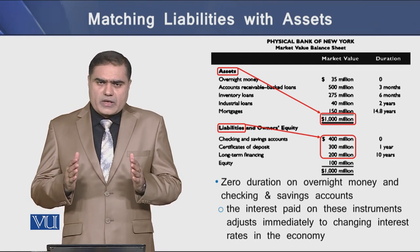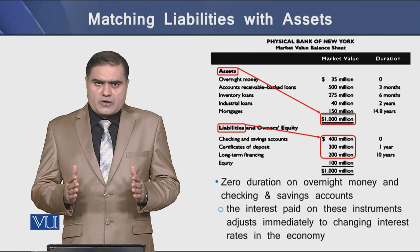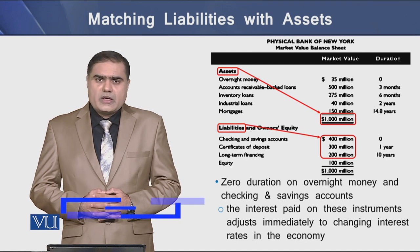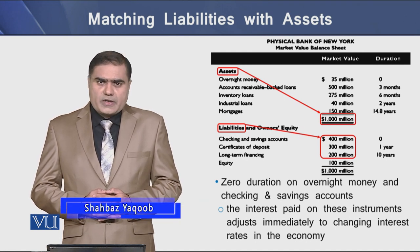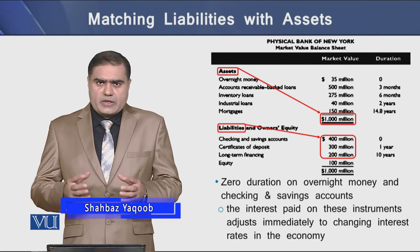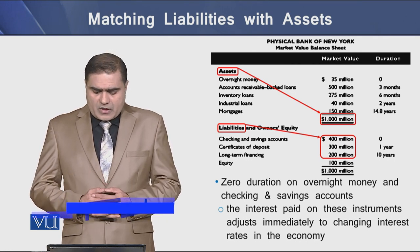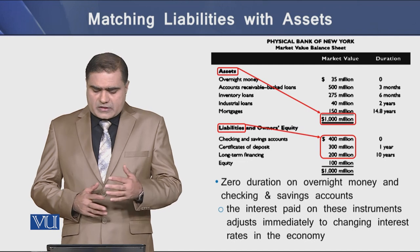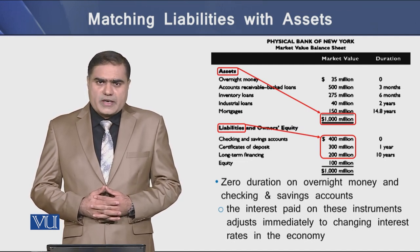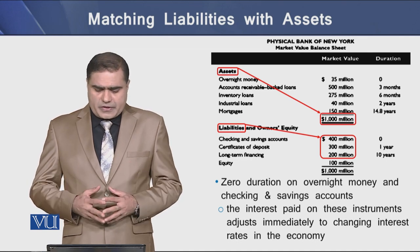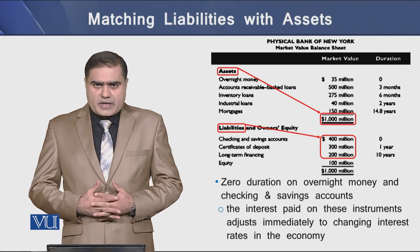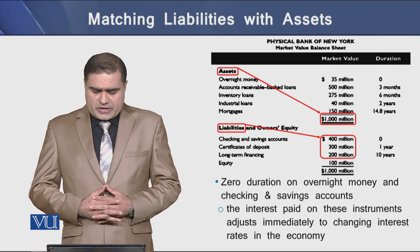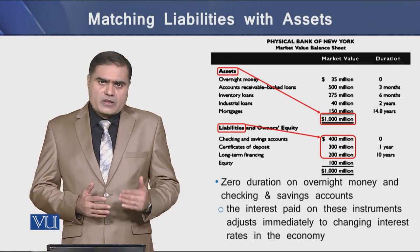We have a market-based balance sheet of a bank that has assets worth $1,000,000,000 and liabilities worth $900,000,000. So the market value of equity of this bank is $100,000,000. There is zero duration on overnight money on the assets side, and checking and savings accounts on the liabilities side, because the interest paid on these instruments adjusts immediately to changing interest rates in the economy.